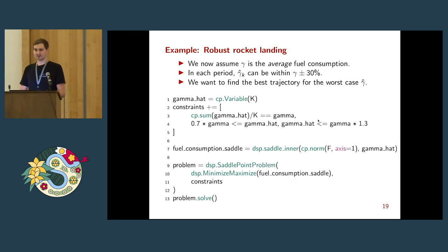What if gamma is not your actual fuel consumption at any given point, but the engineers tell you it's just an average. At any given point in time, it could be plus or minus 30%. So now you're not sure, well, the trajectory, how much fuel could it be in the worst case? How can we model that now using DSP? We just add a few lines to our rocket landing example. Namely, we say gamma is now not a constant, but gamma_hat is a variable. We add constraints that say on average gamma_hat should be gamma. But at any given point, gamma might be between 0.7 times gamma and 1.3 times gamma. Now we use DSP's atom called saddle_inner to create the inner product of these vectors and create the saddle point problem to minimize in our regular variable.